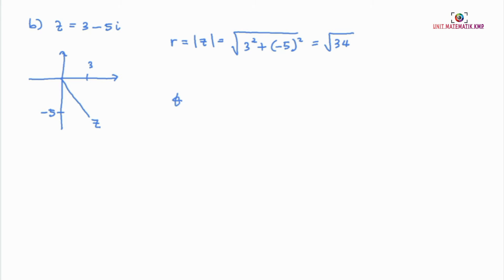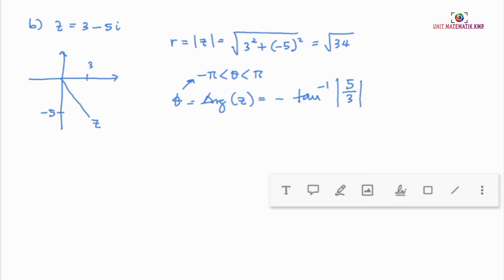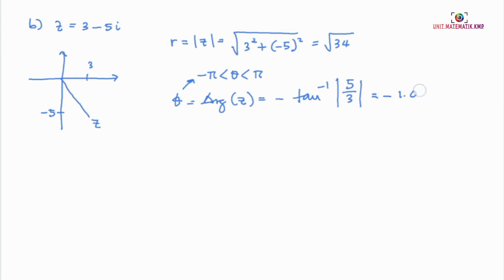To find the argument, we look at the Argand diagram and see that Z is in the fourth quadrant. The formula for the argument is negative tangent inverse of 5 over 3. The formula is negative because the interval for argument is from negative pi to pi, and we use positive 5 rather than negative 5 to ensure the angle is acute. By calculating this, we get negative 1.03 radians.